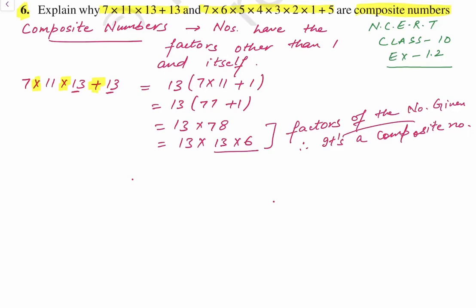Now let's try the second one, which is 7 into 6 into 5 into 4 into 3 into 2 into 1 plus 5. Make sure you don't miss any number — write all the numbers. Now from this, we can take 5 as common, because there is a plus sign between this and the multiply signs.